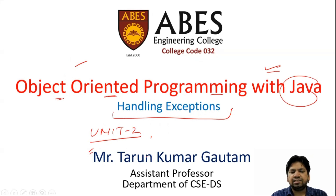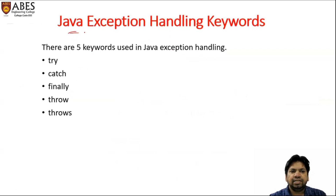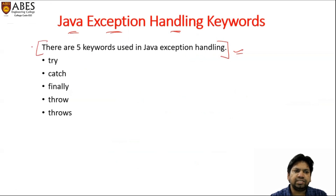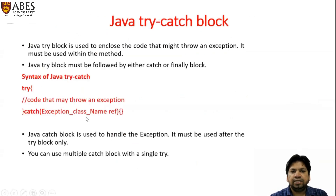We have already discussed the idea of exceptions — what is the meaning of exceptions — but in this lecture we will discuss the handling of exceptions. Let's start with Java exception handling keywords. There are some keywords you may be aware of: try, catch, finally, throw, and throws. There is a difference between throw and throws. Now we will discuss them one by one.